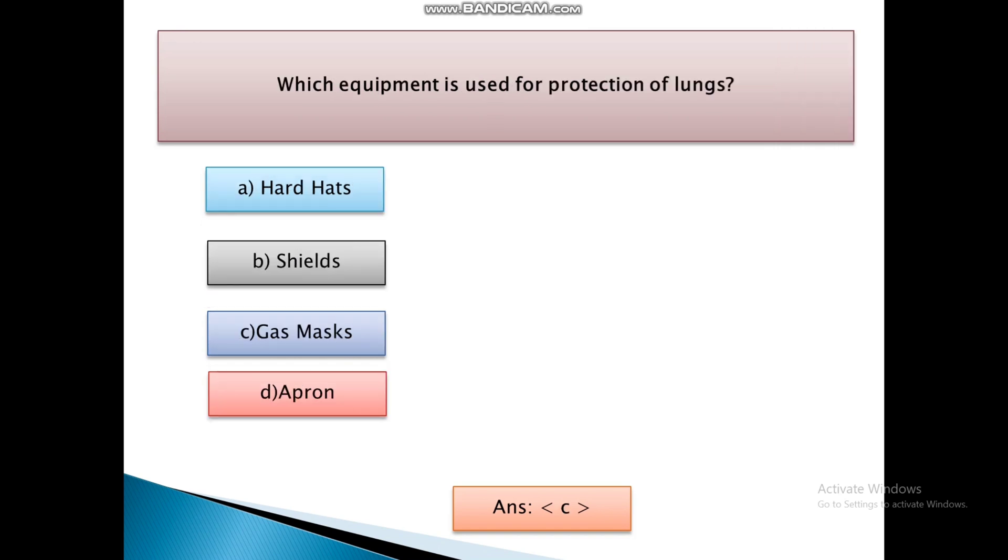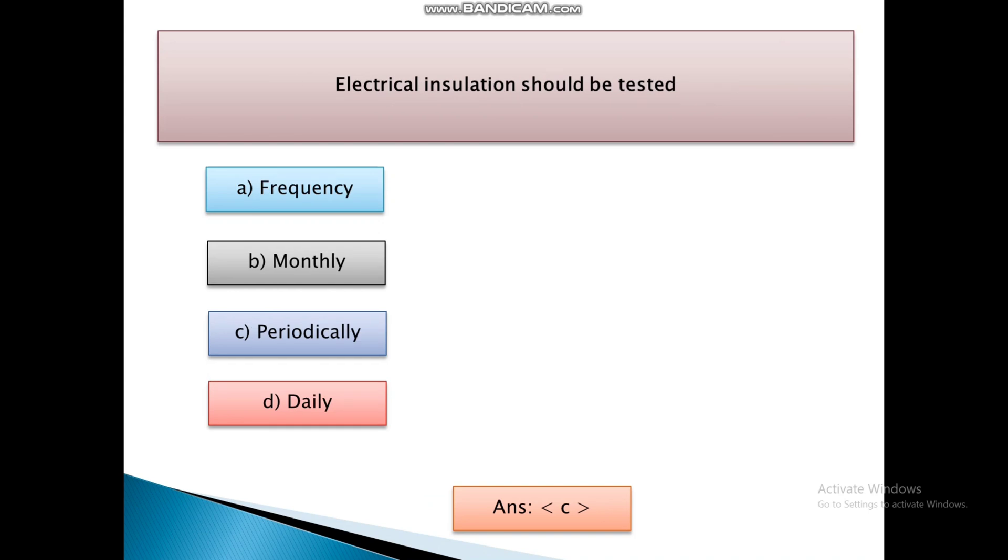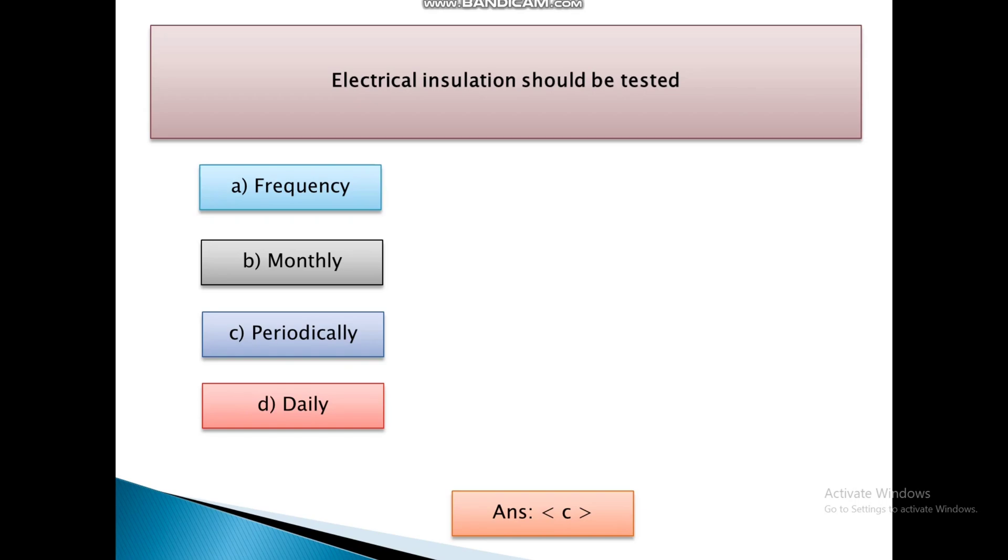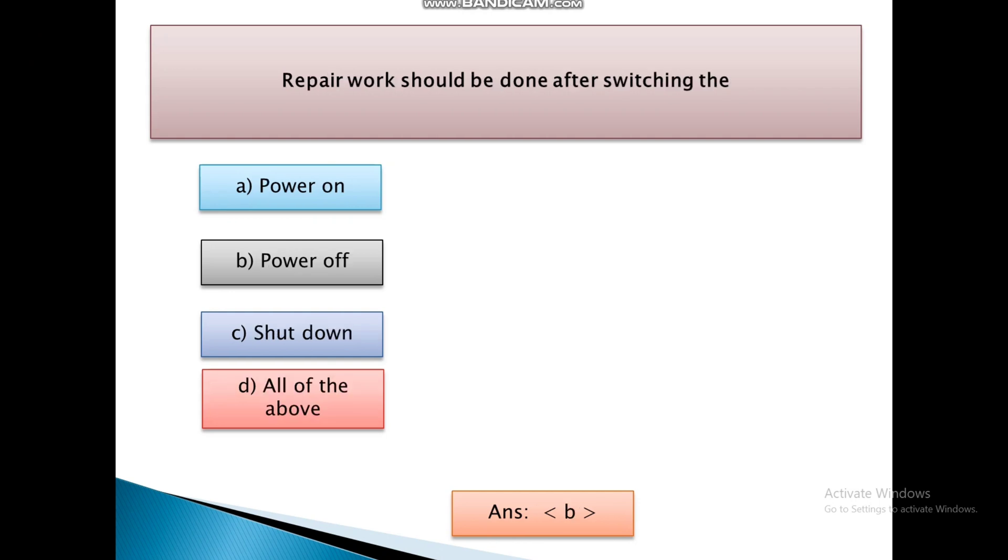Which equipment is used for protection of lungs? First, Hard hats. Second, Shields. Third, Gas mask. And the answer is C, that is gas masks are used for protection of lungs. Electrical insulation should be tested: frequently, monthly, periodically, and daily. And the answer is C, that is periodically. Repair work should be done after switching the power on, power off, shutdown, and all of the above. And the answer is B, that is power off.